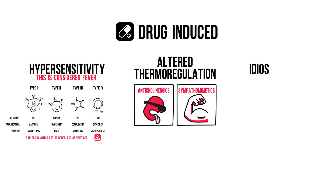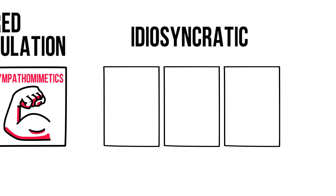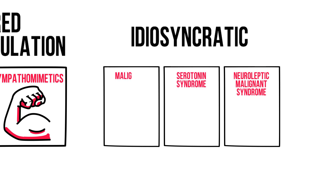The third category of drug-related hyperthermia is idiosyncratic drug reactions — unpredictable, bizarre drug reactions that can occur irrespective of the given dose. Notable ones that cause hyperthermia are neuroleptic malignant syndrome, serotonin syndrome, and malignant hyperthermia. Malignant hyperthermia occurs in response to general anesthesia in patients with a rare autosomal dominant gene defect. If you're in anesthesia, it's vital that you know about this syndrome — an interesting article is linked in the description.